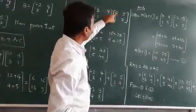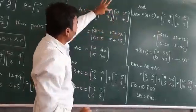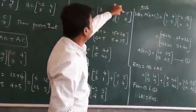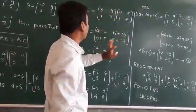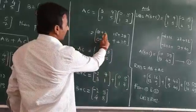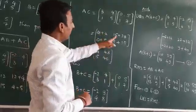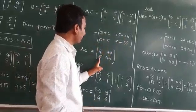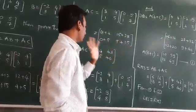Again, 1 into 0 is 0, 5 into 1 is 5. 1 into 5 is 5, 5 into 7 is 35. Now, 0 plus 4 is 4 and 15 plus 28 is 43. 0 plus 5 is 5, and then 5 plus 35 is 40. So we got AC.